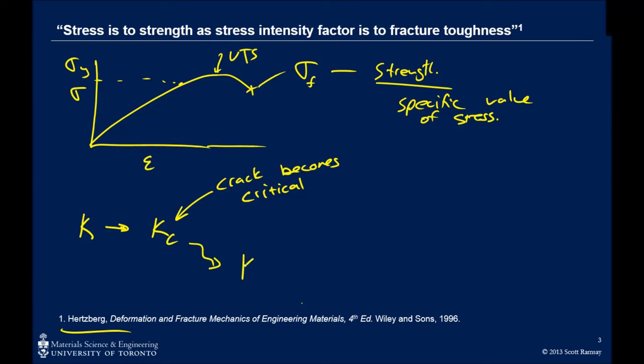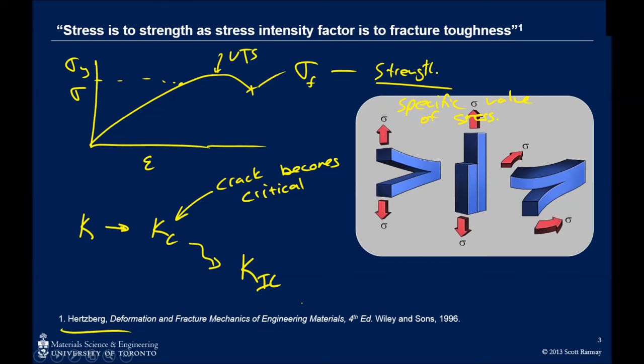And more specifically, we're going to look at the most common form of the critical stress intensity factor, the plane strain fracture toughness, K1c. And the 1, the Roman numeral 1 there, actually refers to mode 1 crack displacement. That's crack opening.